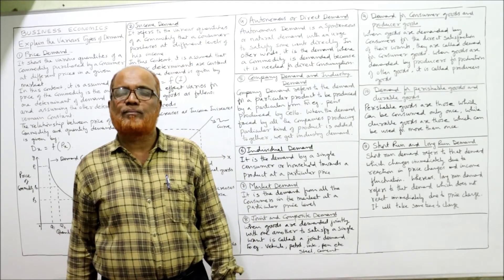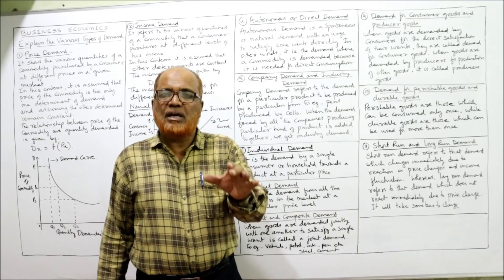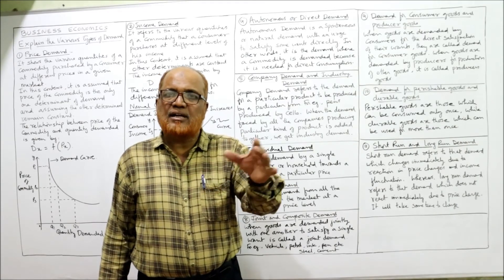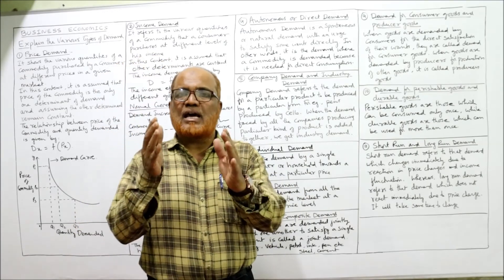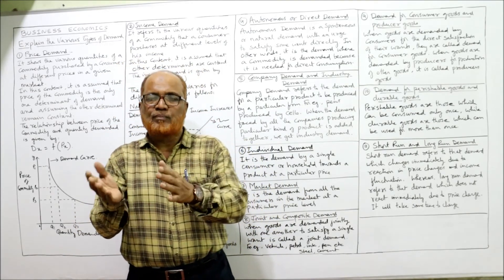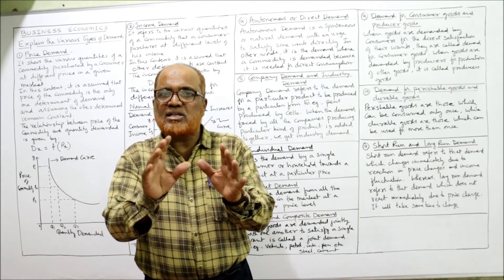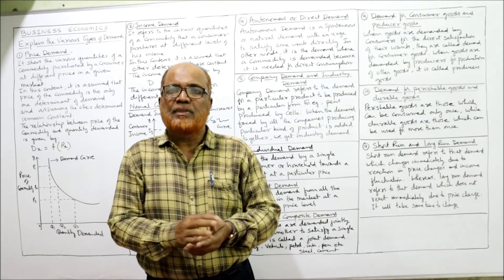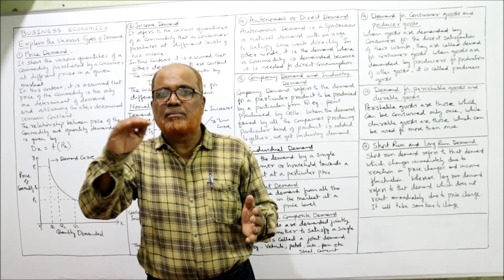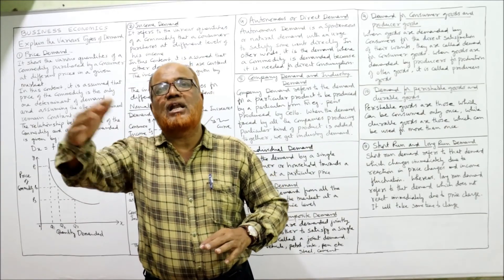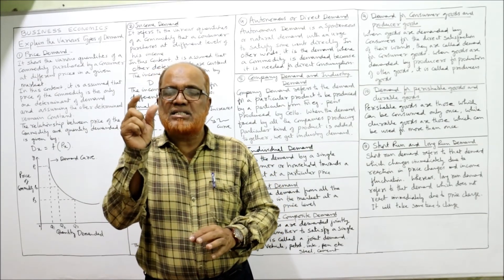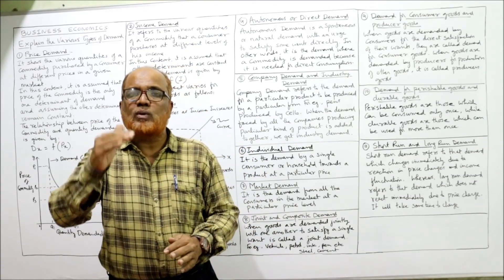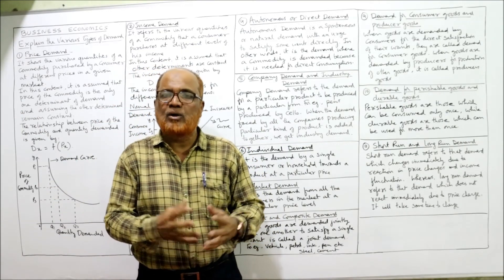Short-run and long-run demand: in the short run, demand is affected by many factors such as price, advertisement, and income, causing more fluctuations. In the long run, demand is more or less stable with only slight changes. Fluctuations in demand are greater in the short period compared to the long period.